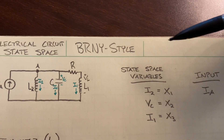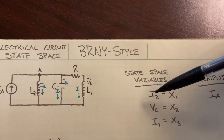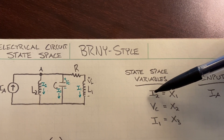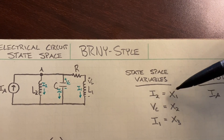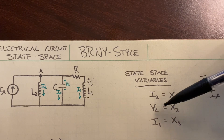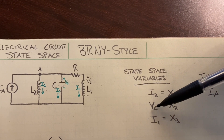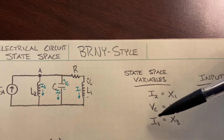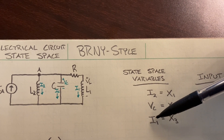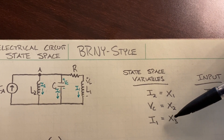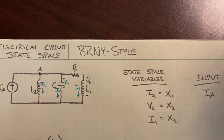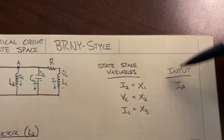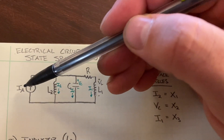Our state space variables will be: the current across inductor L2 as X1, the voltage drop across the capacitor as X2, and the current across inductor L1 as X3. The input to our system is going to be this current source.